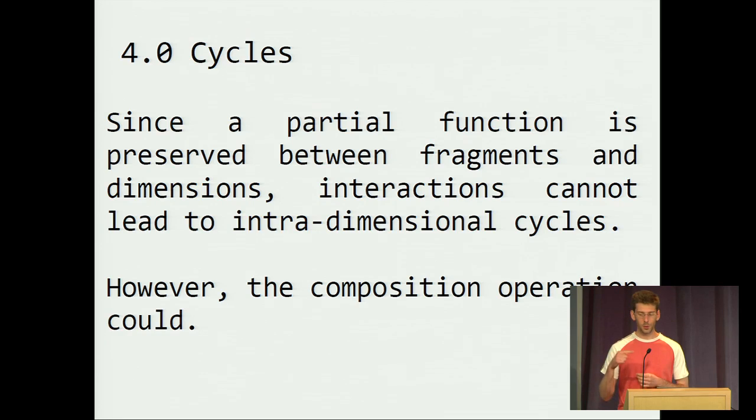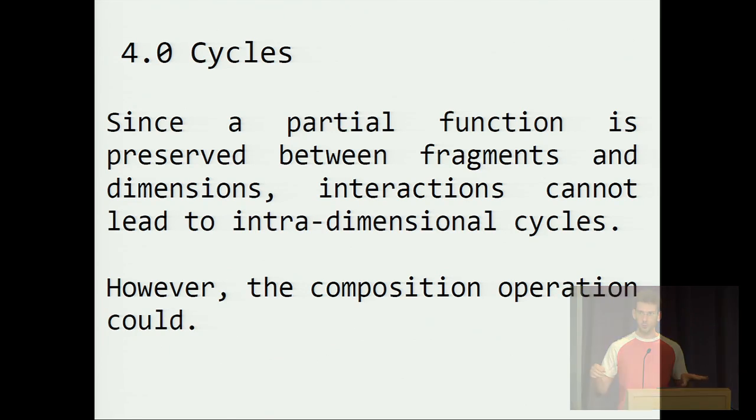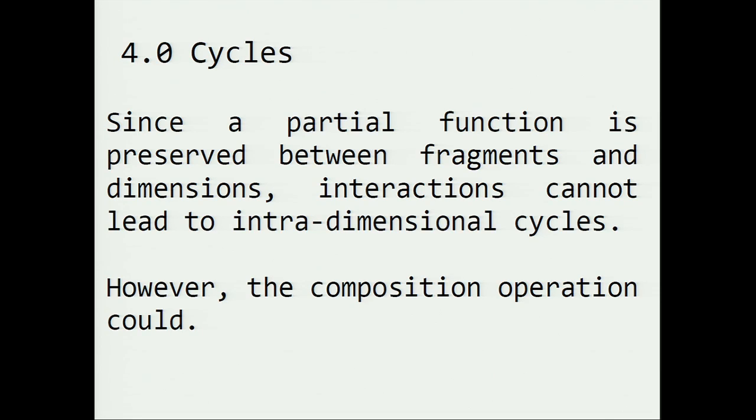Now since we said that there is a partial function which must be preserved between fragments and dimensions, there cannot be intradimensional cycles since a fragment can appear at most once inside a dimension. So, with normal interactions, users can never make a cycle appear inside a dimension. But, once we introduce this composition operation, a cycle can appear theoretically. And so, let's see why.